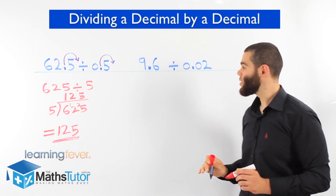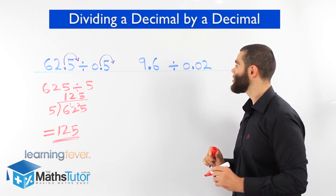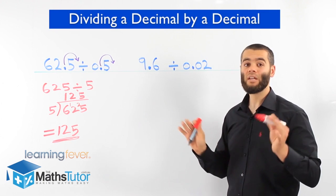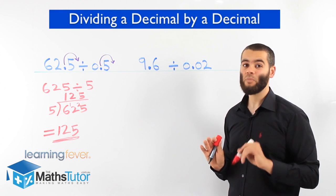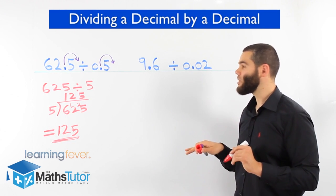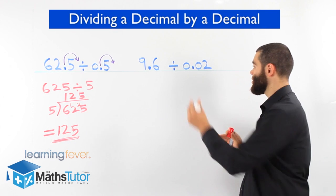Let's see this example here. We have 9.6 divided by 0.02. We look at it and we think, hey, hang on. We can't actually divide a decimal by a decimal. So we use that trick over there. We've got to change it so we can divide by a whole number. So this has to change.